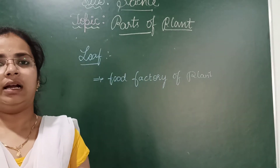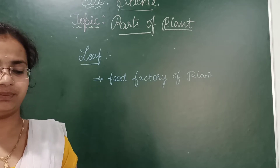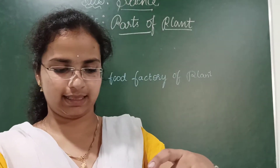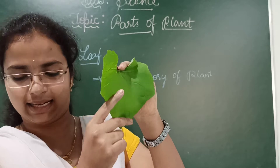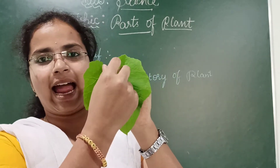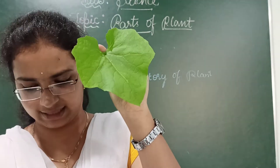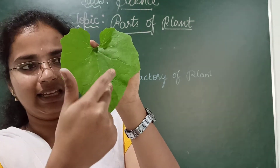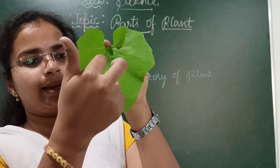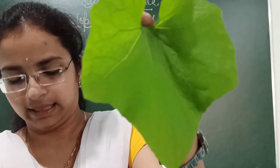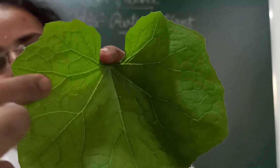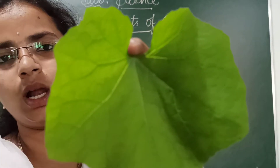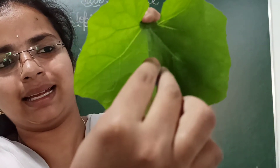I will show you what are the parts of the leaf. Here is a leaf. The flat part of the leaf is called the leaf blade, and it contains some channel-like structures. They are called veins. The main vein running at the middle of the leaf is called the mid vein.